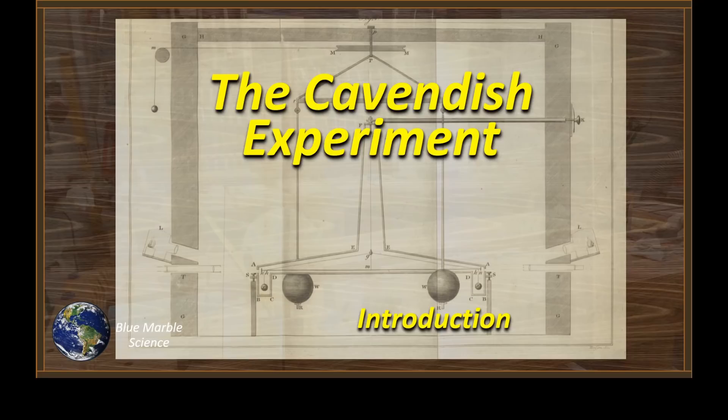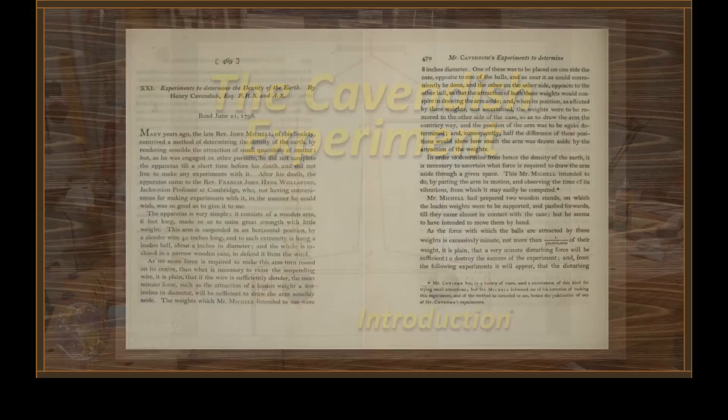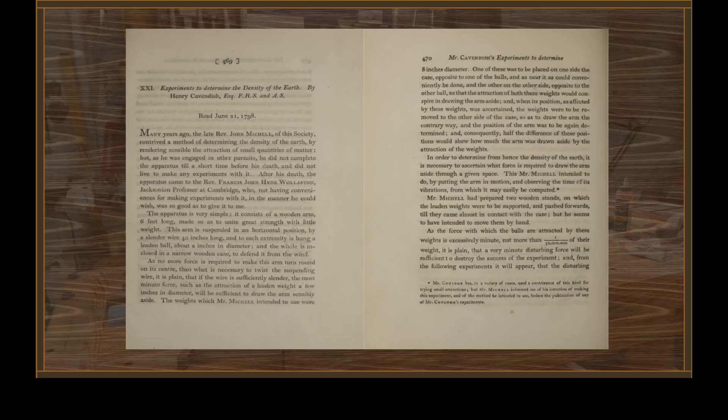I can describe the experiment in my own words, but I think Cavendish did such a wonderful job in the paper he published that we should probably just read his words. The title of the paper is 'Experiments to Determine the Density of the Earth by Henry Cavendish, Esquire, Fellow of the Royal Society and A.S.' — we've yet to understand what A.S. really means; maybe one of you can help. This paper was read at the Royal Society on June 21st, 1798.